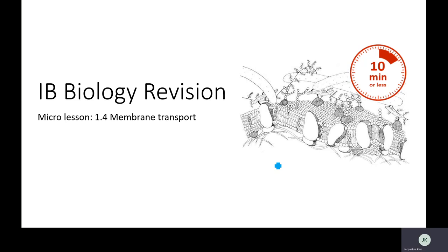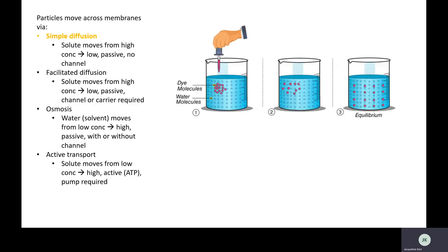1.4 membrane transport. For things to get in and out of cells, they need to cross the membranes. Some things can do this via simple diffusion, which means they go from an area of high concentration to low, which requires no effort or energy.